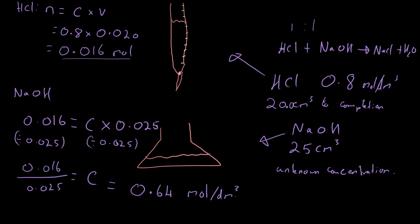Doing that calculation gives a final concentration of 0.64 mol dm⁻³. So the unknown sodium hydroxide solution has a concentration of 0.64 mol dm⁻³ — that's our answer. The only reason we could do this is because the indicator told us when the reaction was finished. One important practical point: you need to carry out the titration more than once because it's hard to read the exact moment the indicator changes color, especially if you pour too quickly.